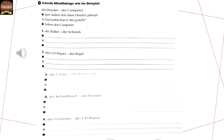Nummer 2: der CD-Player, das Regal. Herr Zollers hat einen CD-Player gekauft. Und wohin hat er ihn gestelt? Auf das Regal. Herr Zollers hat eine Lampe gekauft. Und wohin hat er ihn gestelt? Auf die Kommode. Simple.